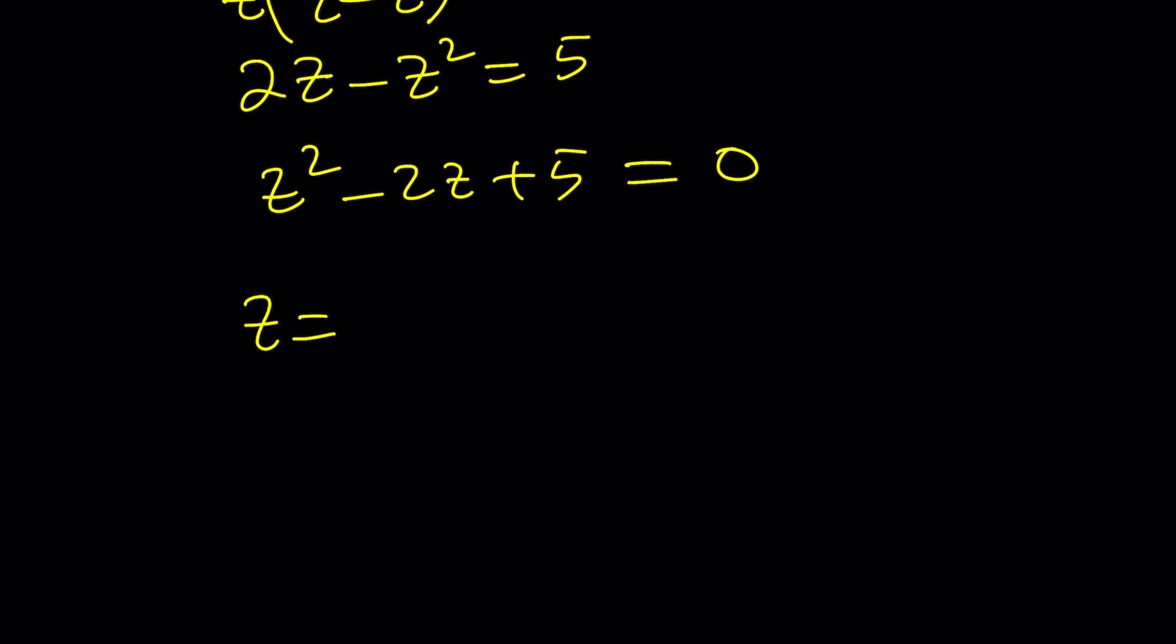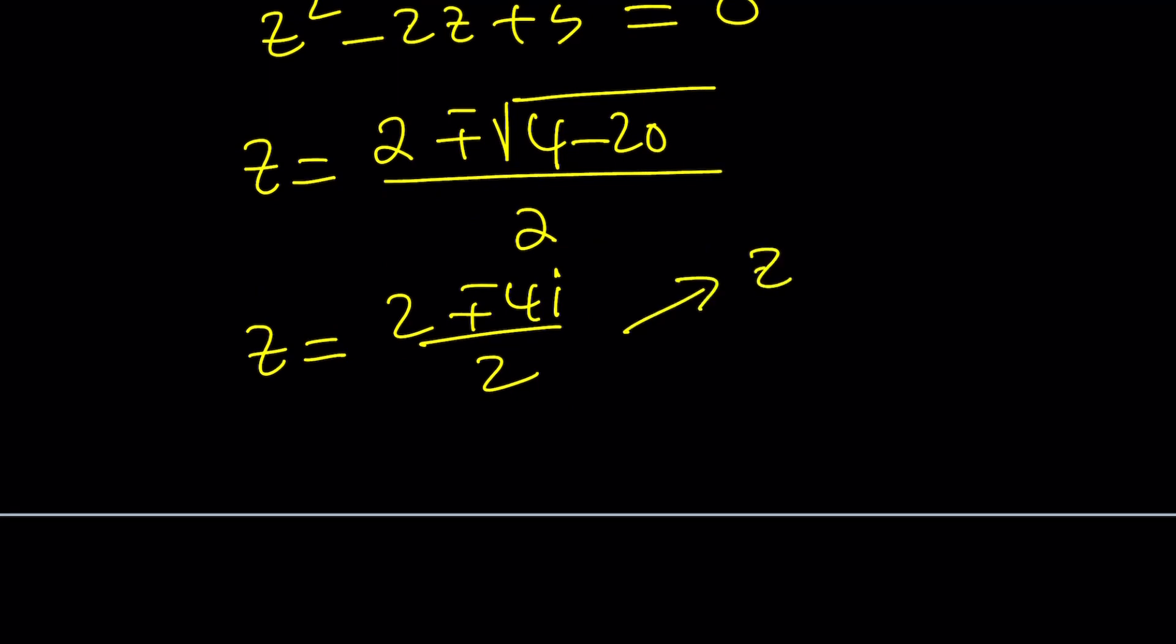So from the quadratic formula, this is going to be negative B plus minus the square root of B squared which is four minus 4AC which is 20. That's going to be a negative 16, and the square root of negative 16 is going to be plus minus 4I. So it's going to look like this, and once you divide by two you're going to get Z sub one equals one plus two I and Z sub two is going to be one minus two I.